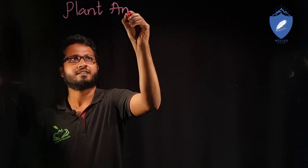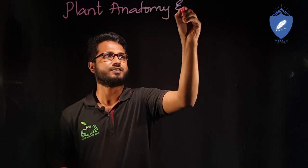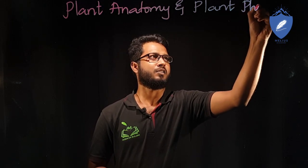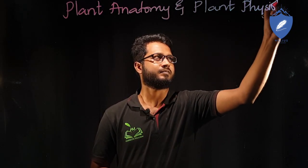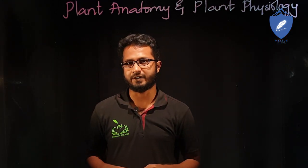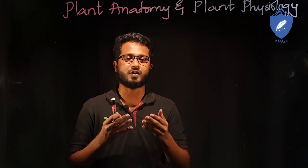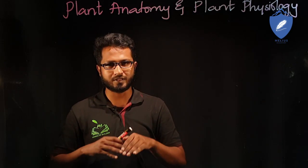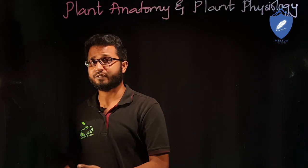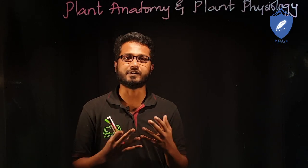Firstly we have plant anatomy, followed by plant physiology. Giving an overview of this particular chapter: anatomy talks about internal details — what exactly is happening within the cell, how cells are going to divide, how tissue is going to be formed, what is the function of each tissue, and how they conduct food and water and all those activities.